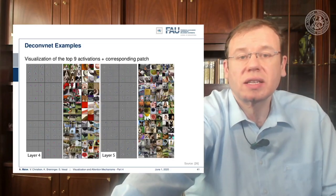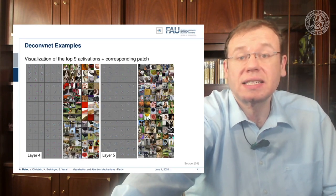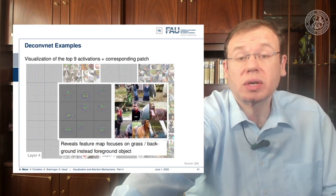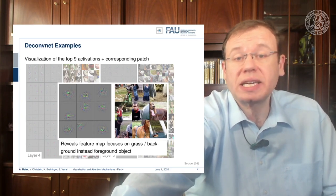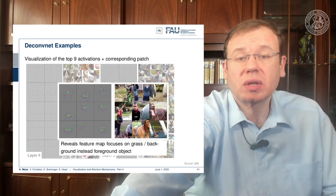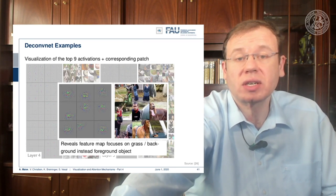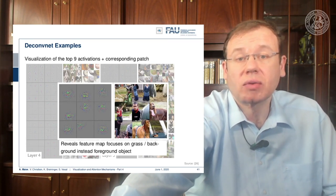Here we show the visualizations of the top nine activations, the gradient, and the corresponding patch. For example, you can reveal that this particular feature map seems to focus on green patchy areas, and you could argue that this is more of a background feature that tries to detect grass patches in the image.